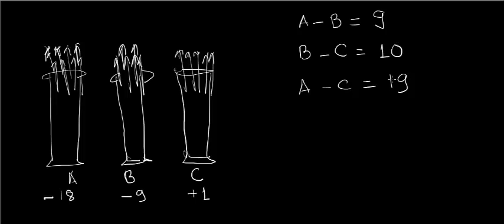Testing the first option: A = 44, B = 35, C = 25. A minus B = 9 ✓, B minus C = 10 ✓, A minus C = 44 minus 25 = 19 ✓. All conditions are satisfied, so the correct answer is option 1.